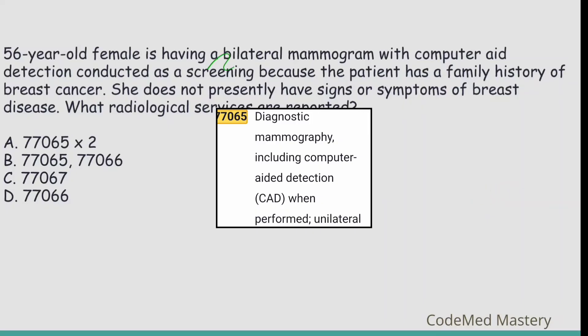The question mentions a bilateral mammogram with computer-aided detection conducted as a screening. Code 77065 is for diagnostic mammography, unilateral. It would be wrong to multiply the code twice for bilateral. Eliminate option A.